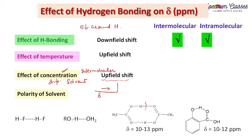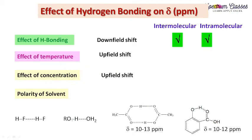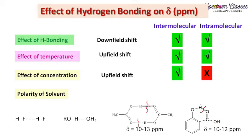To summarize the effect of hydrogen bonding: it occurs in both intermolecular and intramolecular hydrogen bonding, and we have a downfield shift in both cases. Effect of temperature: on increasing temperature, hydrogen bonding decreases in both inter and intramolecular cases, giving an upfield shift. Effect of concentration: increasing concentration affects intermolecular hydrogen bonding but not intramolecular. On decreasing concentration we get an upfield shift; on increasing concentration we get a downfield shift.